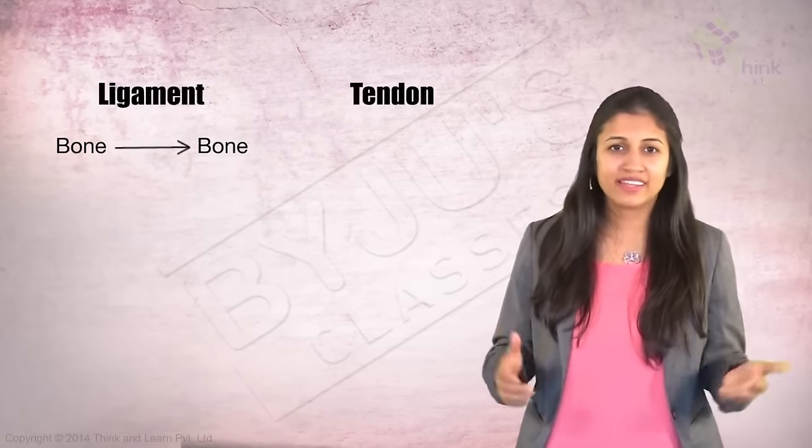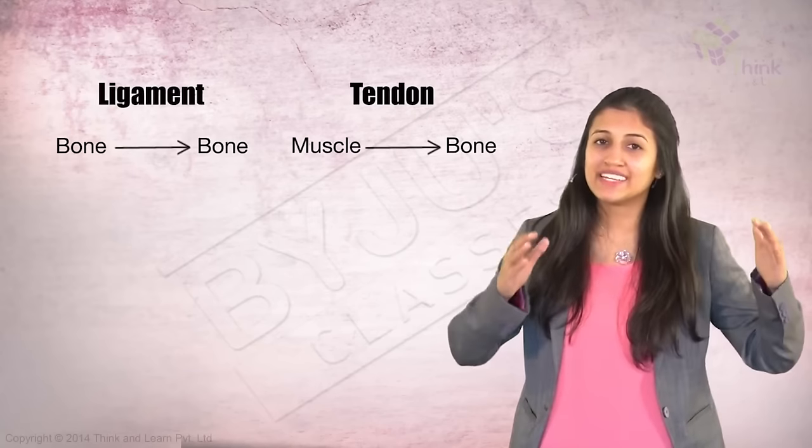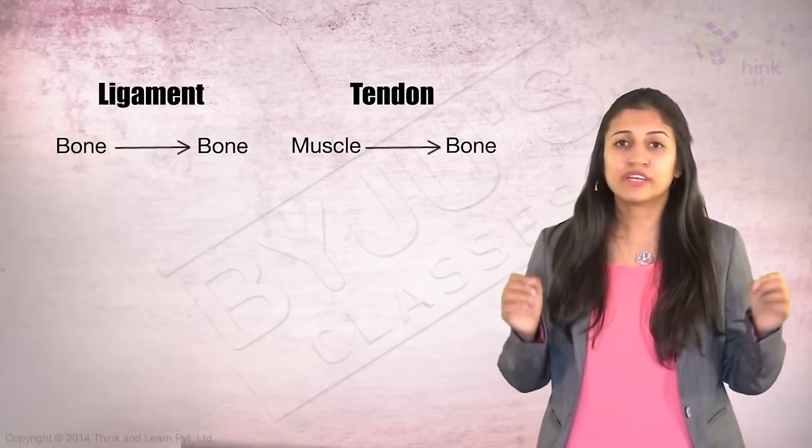So to summarize, ligament is bone to bone and tendon is muscle to bone. So ligaments and tendons, two important types of connections.